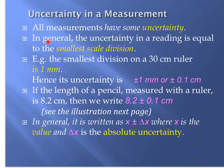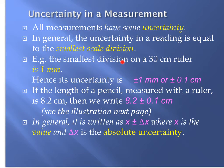In general, the uncertainty in a reading is equal to the smallest scale division. For example, if we use a 30-centimeter ruler to measure the length of an object, the uncertainty is the smallest division on that ruler, which is one millimeter. So the uncertainty is plus or minus one millimeter.